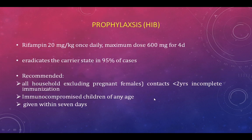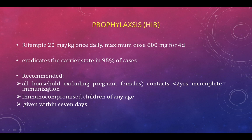For household contacts, rifampicin 20 mg/kg once daily is given as chemoprophylaxis. Prophylaxis for H. influenzae type b is indicated for all household contacts — excluding pregnant females — including contacts under two years with incomplete immunization, immunocompromised children of any age. Prophylaxis should be given within seven days of contact.